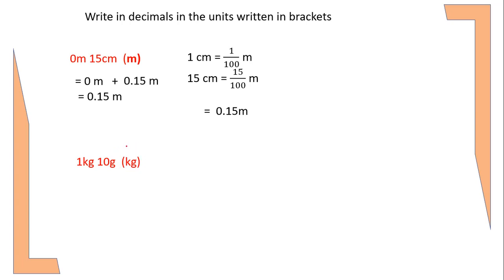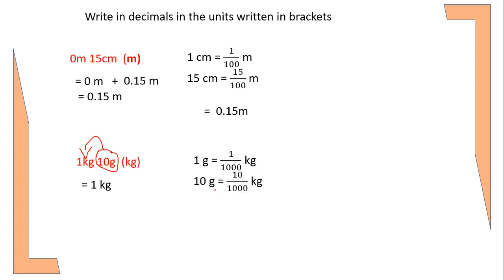To express that, first write the given higher unit as it is. The higher unit is 1 kg. Then I will convert the lower unit, gram, to kg. Since 1 gram equals 1/1000 kg, 10 grams equals 10/1000 kg. After expressing the fraction 10/1000 in decimal, we get 0.010 kg.